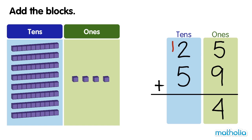Now we can add the tens. 1 ten plus 2 tens plus 5 tens equals 8 tens. There are 84 blocks. 25 plus 59 equals 84.